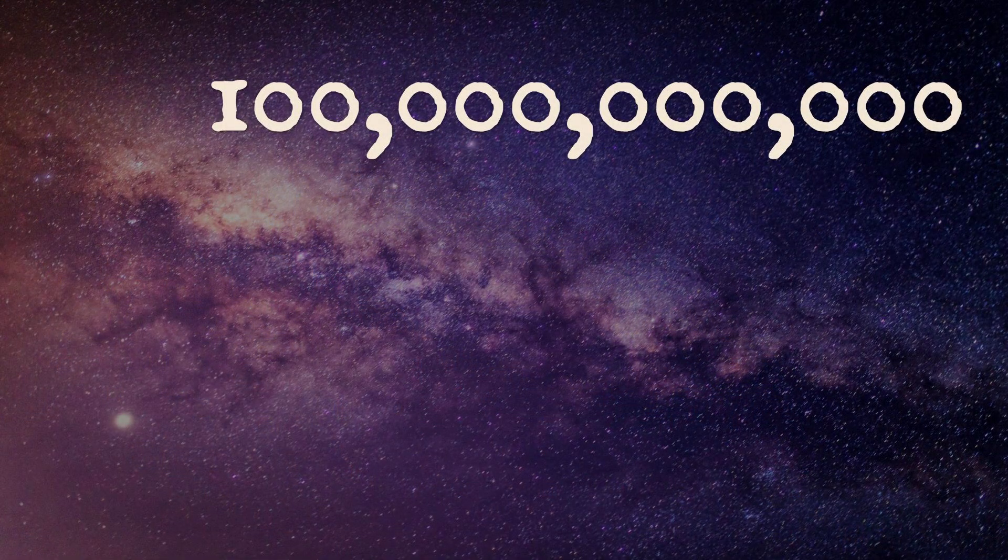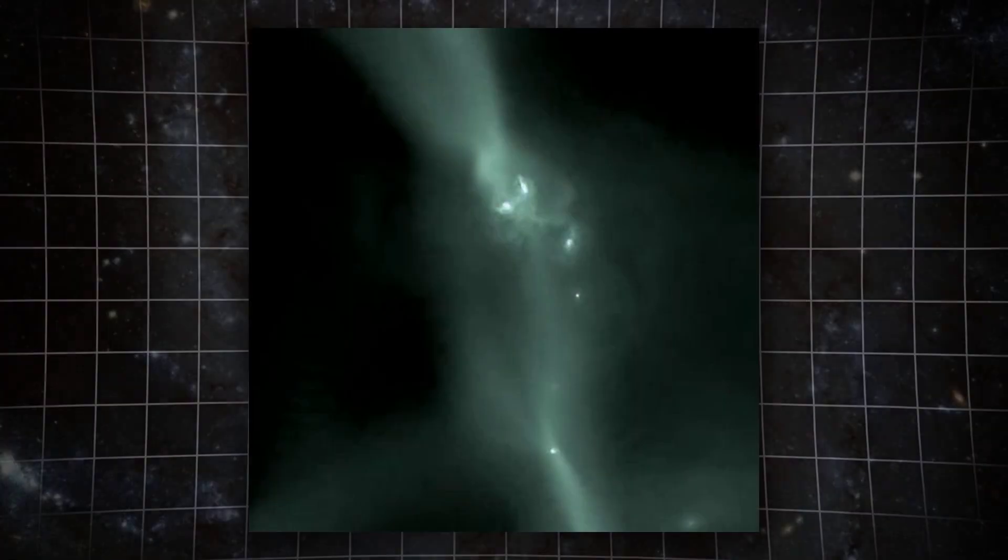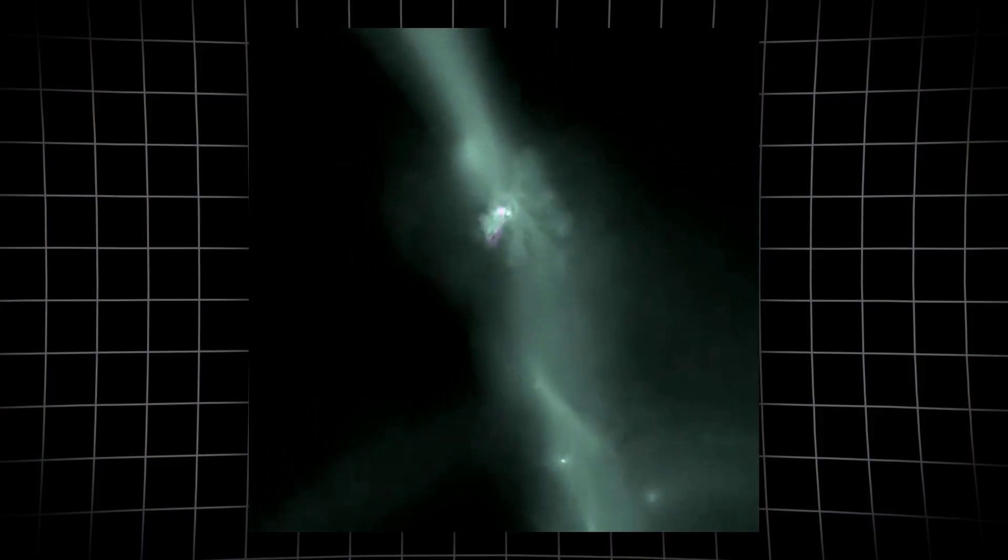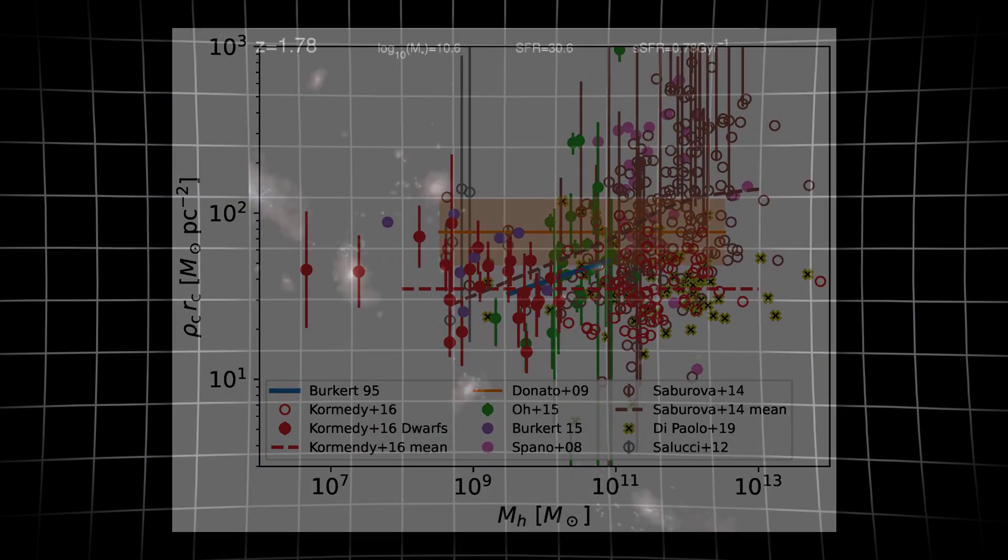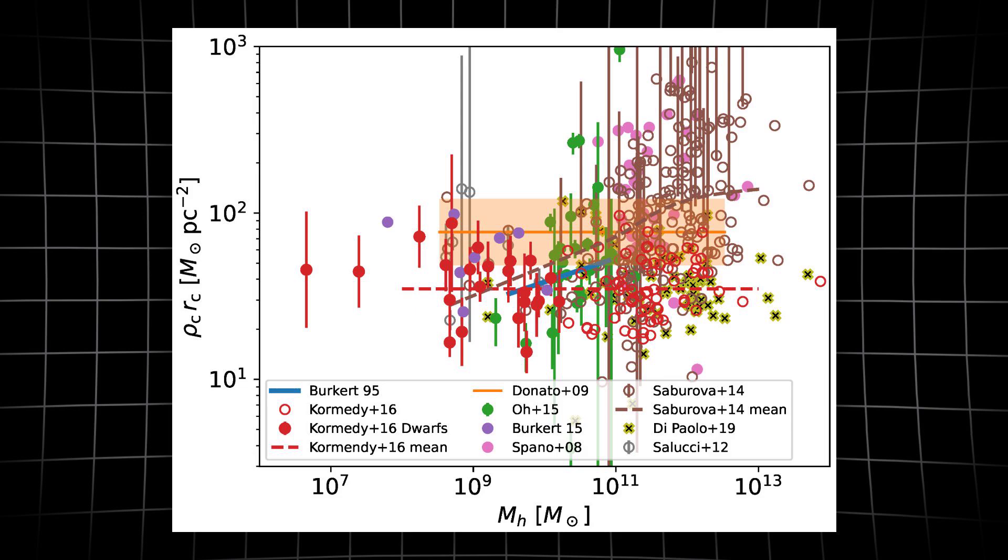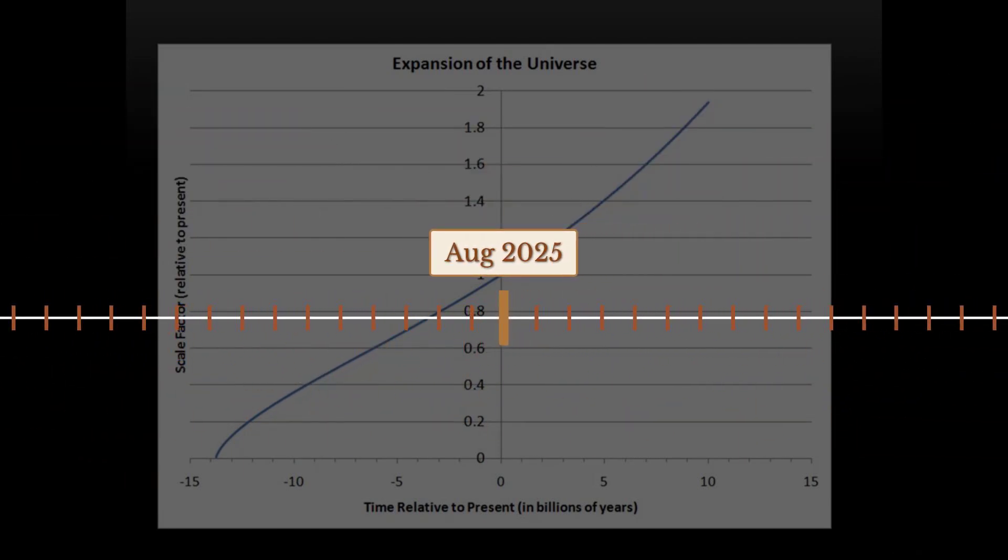Take JADES-GS-z13-0. Its estimated mass is around 100 billion solar masses, comparable to our own Milky Way. Yet the Milky Way took over 13 billion years to reach its size. Here, in a universe barely out of its cosmic cradle, galaxies had somehow assembled enough stars to rival modern giants. The numbers weren't subtle. Mass estimates for some of these early galaxies landed in the range of 10 to the power of 10 to 10 to the power of 11 times the mass of our sun. All this when the universe was only 500 to 700 million years old.